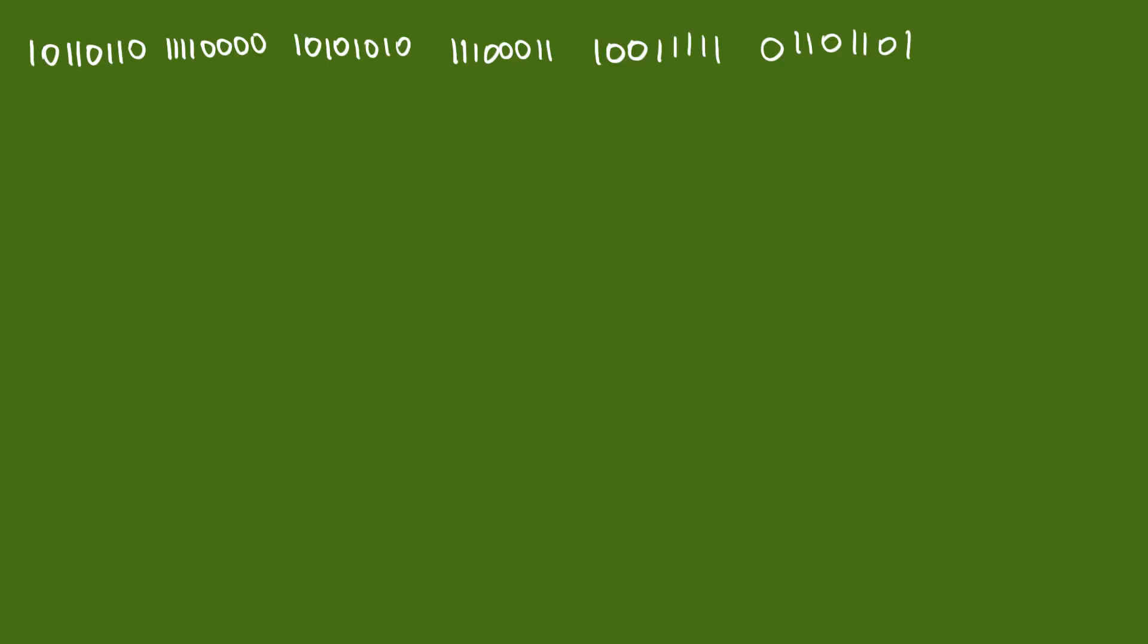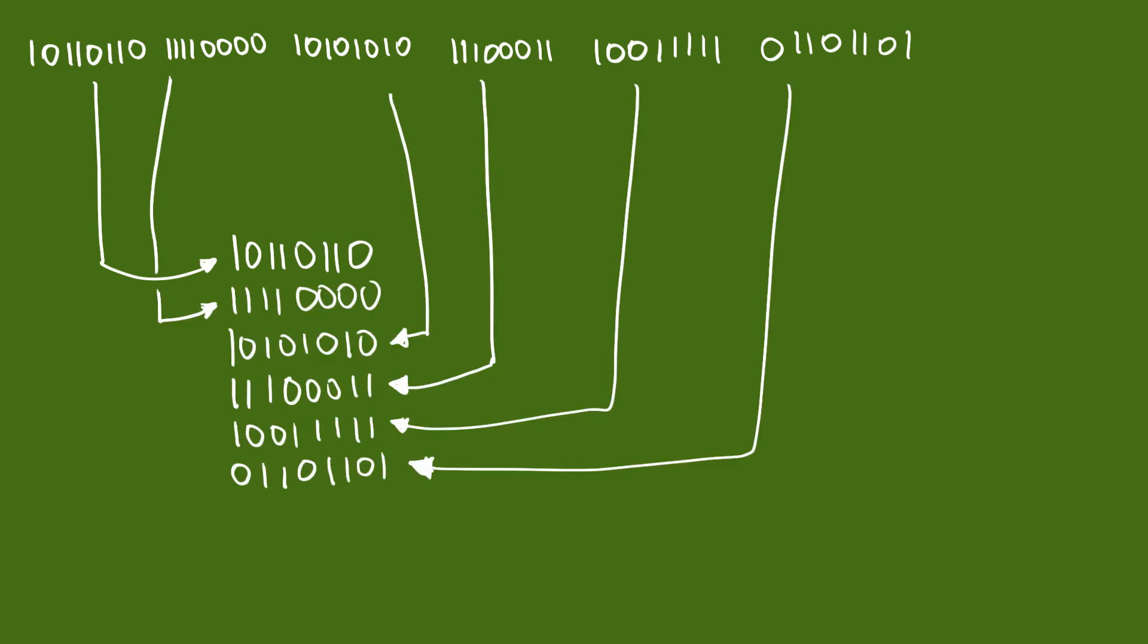so we put the first byte in the first memory address, then the second byte in the second memory address, and so on and so forth until we've reached the end of the data.